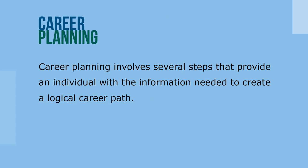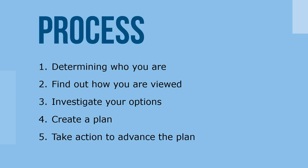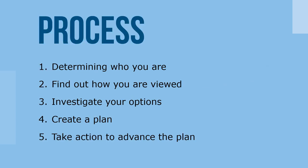Career planning involves several steps that provide an individual with the information needed to create a logical career path. The planning process is not always linear — individuals may cycle back to an earlier step and then move forward again. The primary steps are: first, determine who you are; second, find out how you're viewed; third, investigate your options; fourth, create a plan; and fifth, take action and advance your plan.